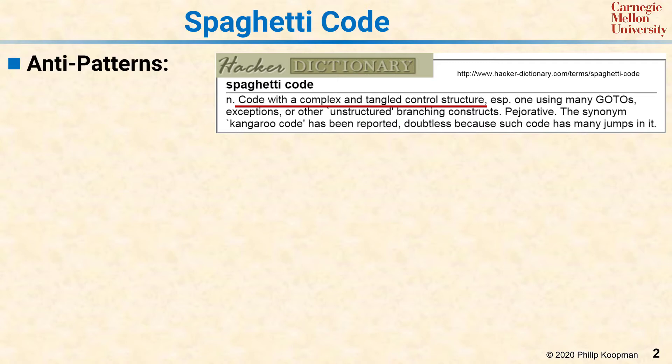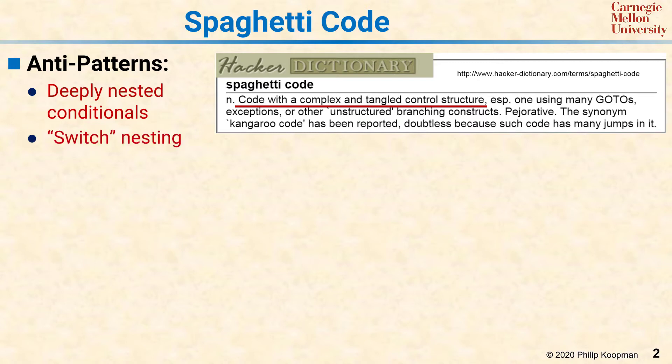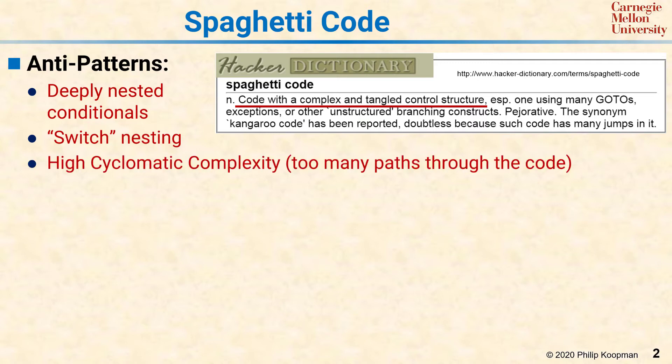Typical anti-pattern signs that you have spaghetti code include the following: deeply nested conditional statements — for example, if-else structures nested four or five or more levels deep; modules that have switch statements nested inside or outside of all but the very simplest if statements; or any code in general that has high cyclomatic complexity, which involves code that has too many paths to perform effective unit testing. We'll talk more about cyclomatic complexity on the next slide.